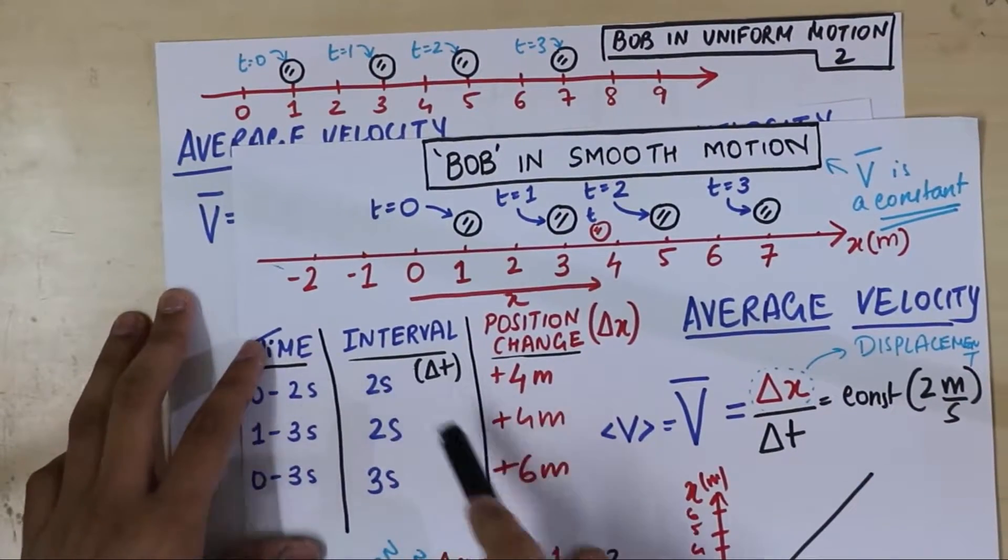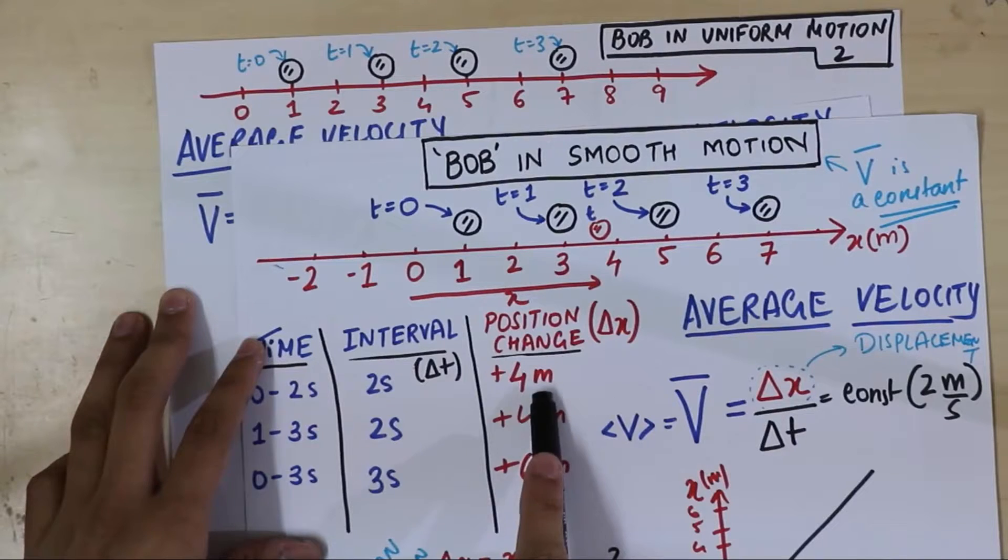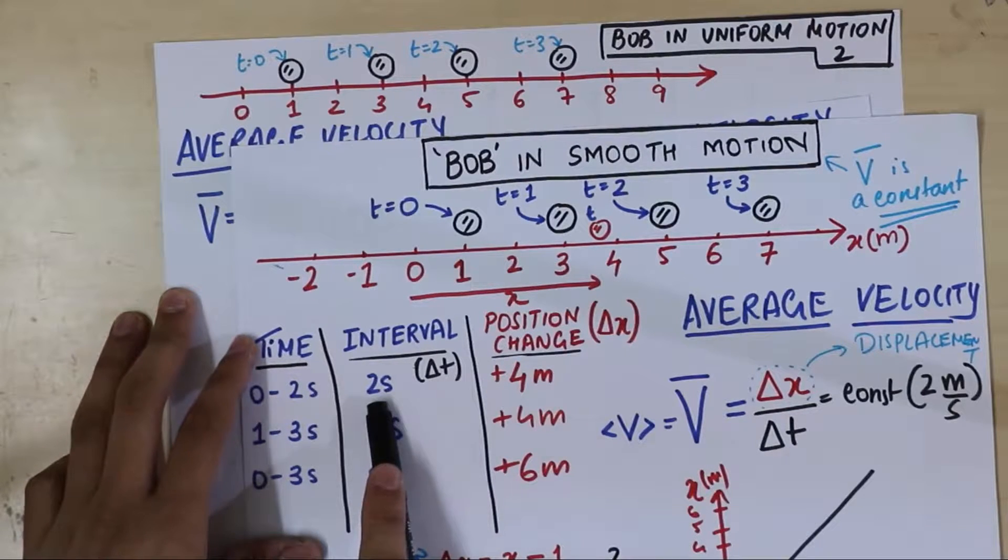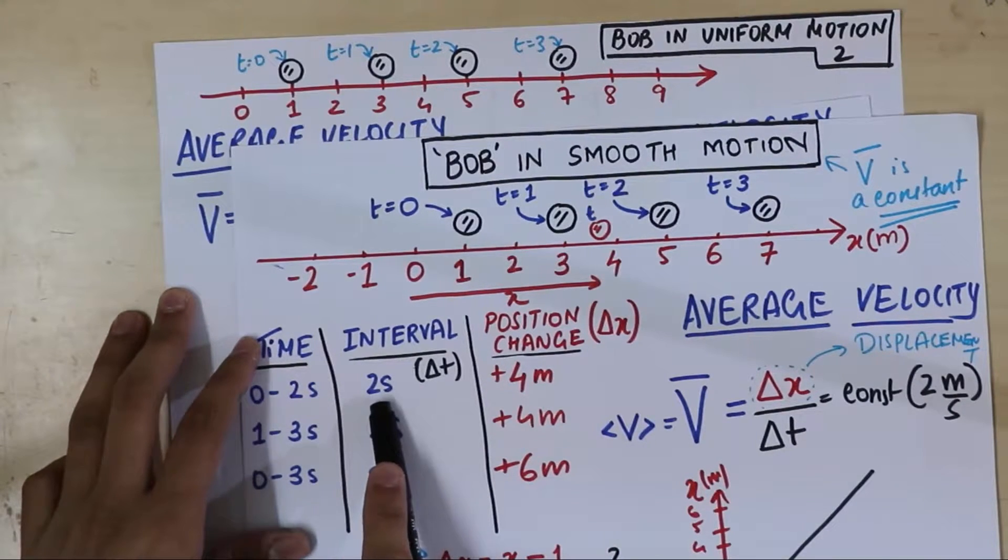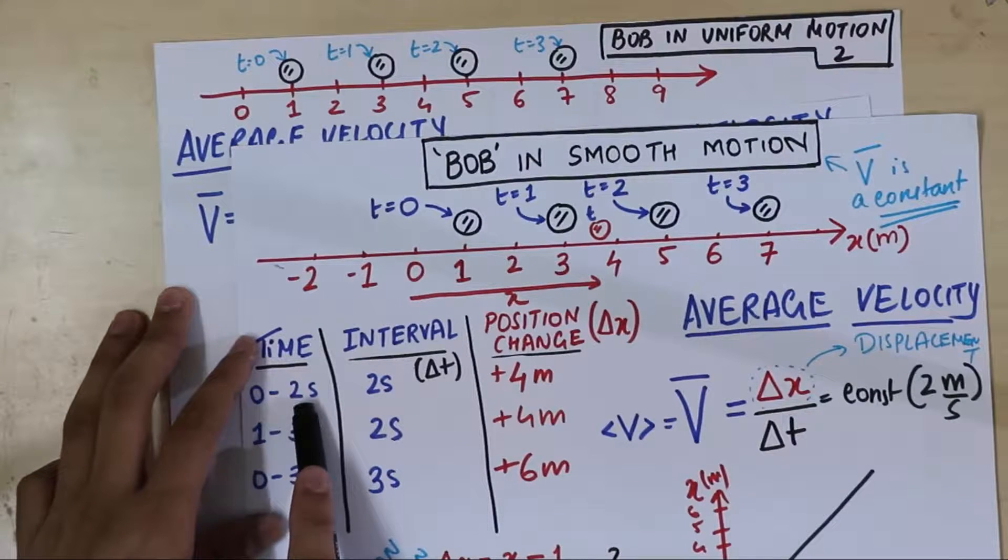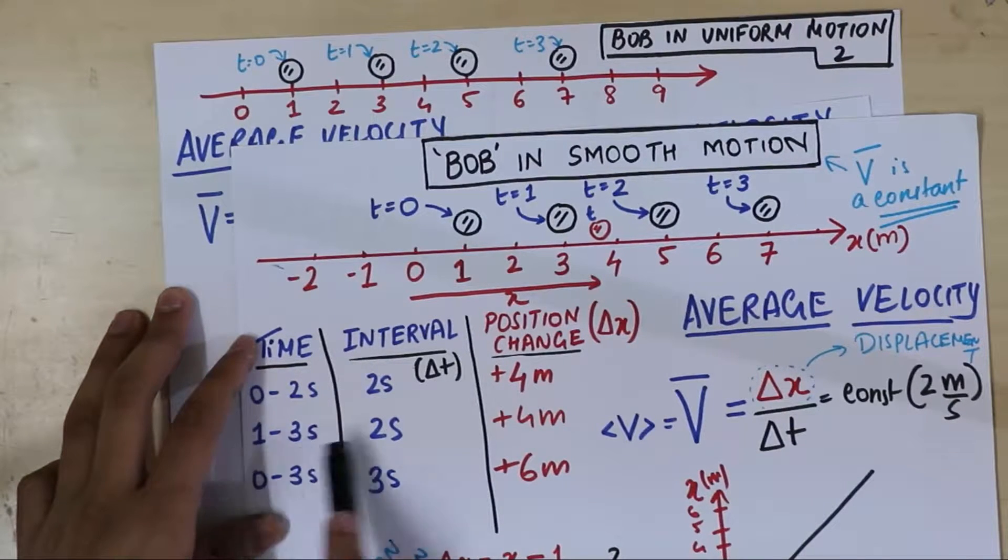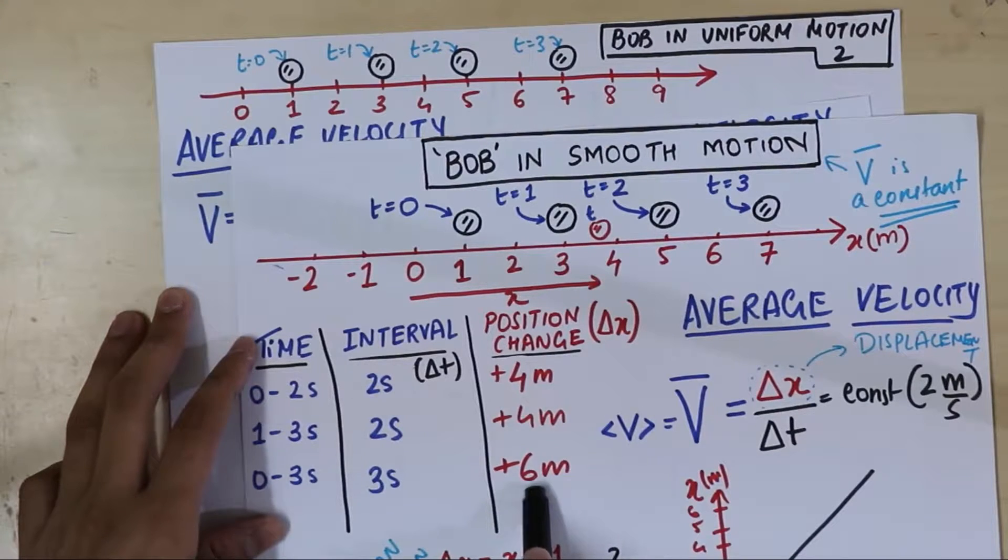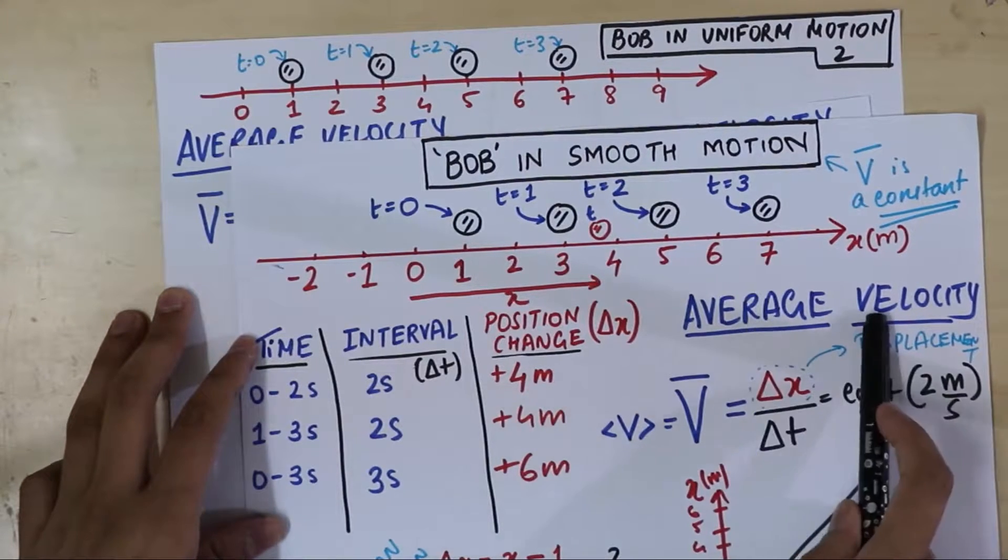We divided the changes of position by the time interval. This is not a moment in time. These were moments of time. We took specific time intervals and we divided it. And that's what we call as average velocity.